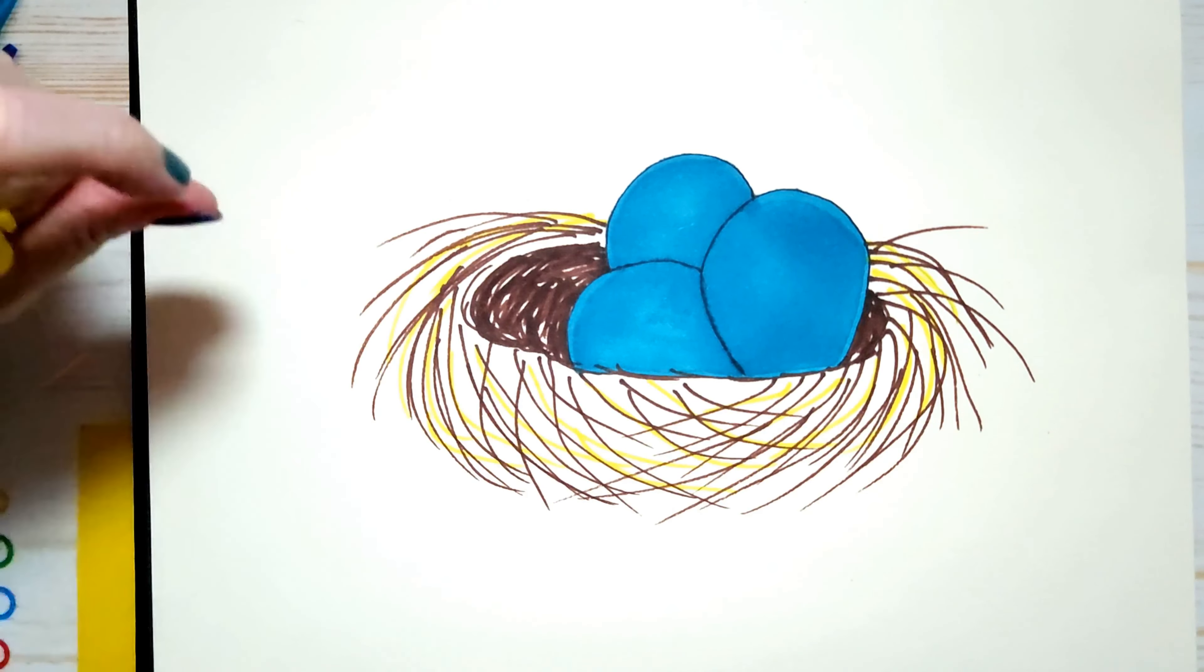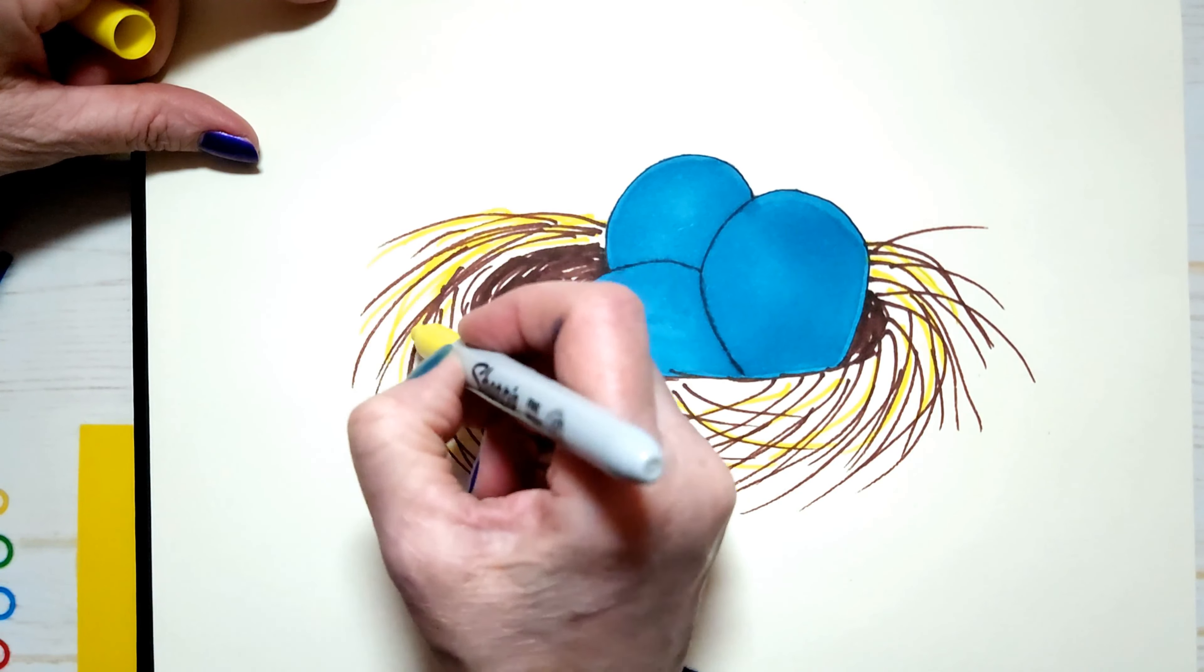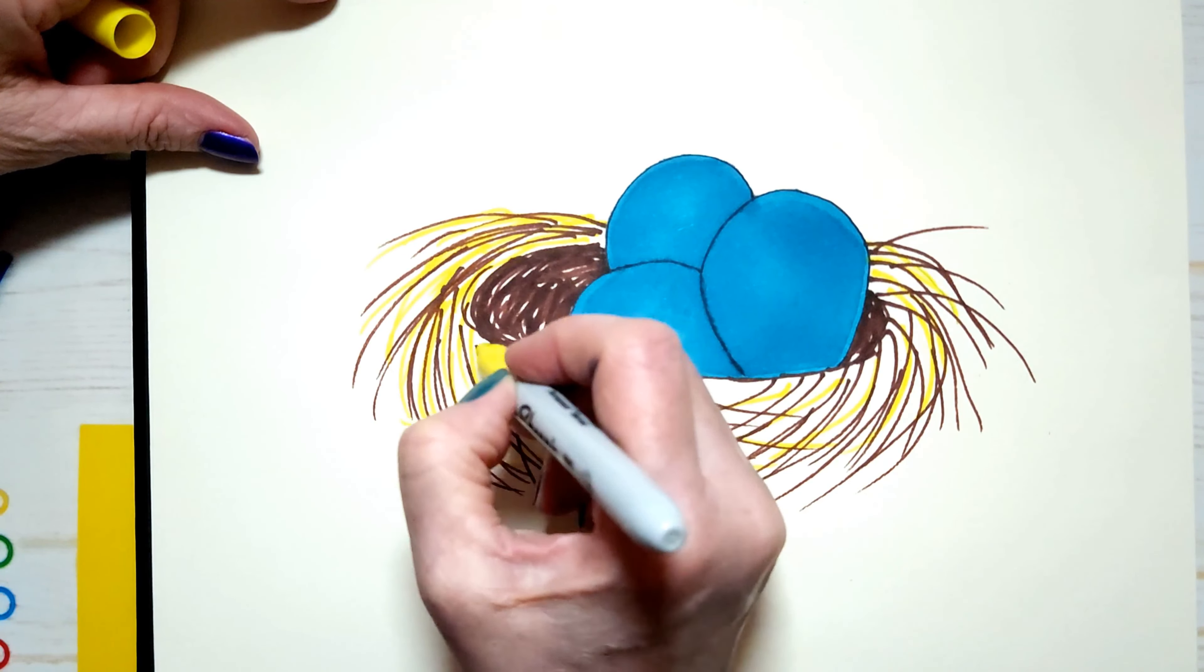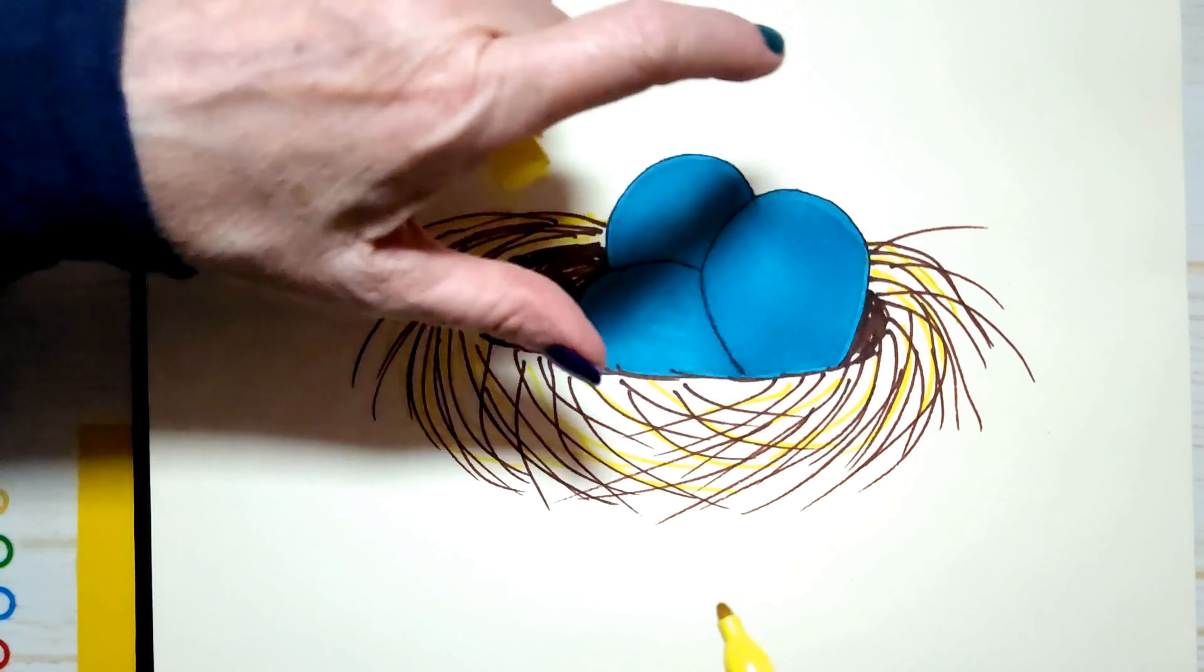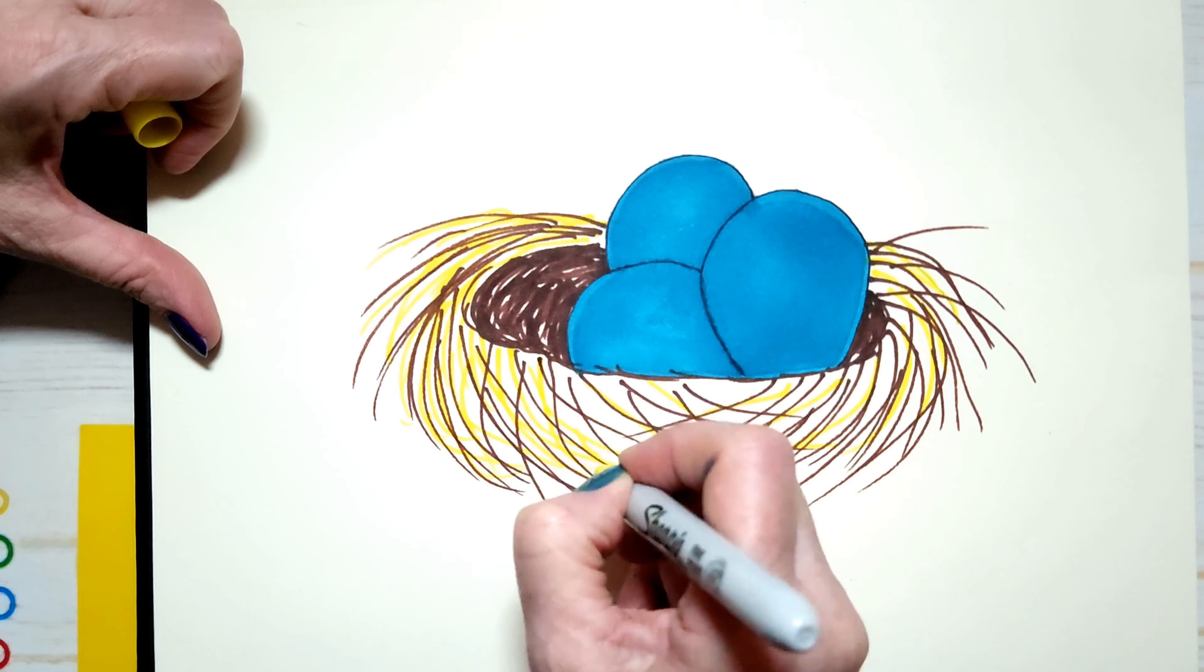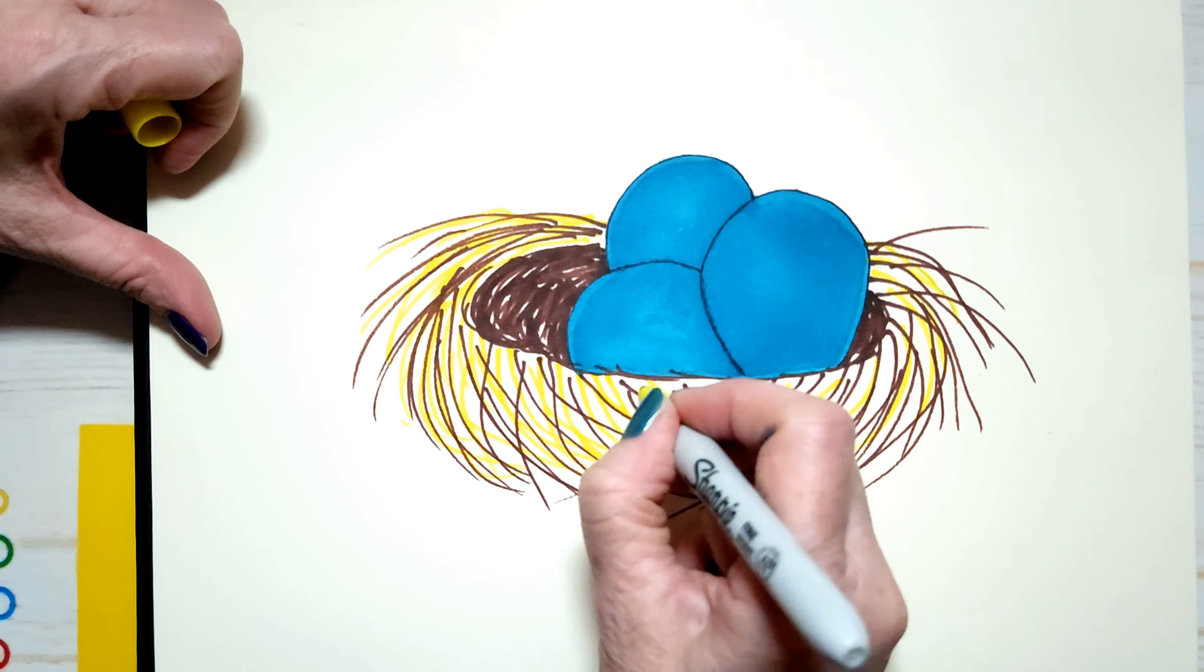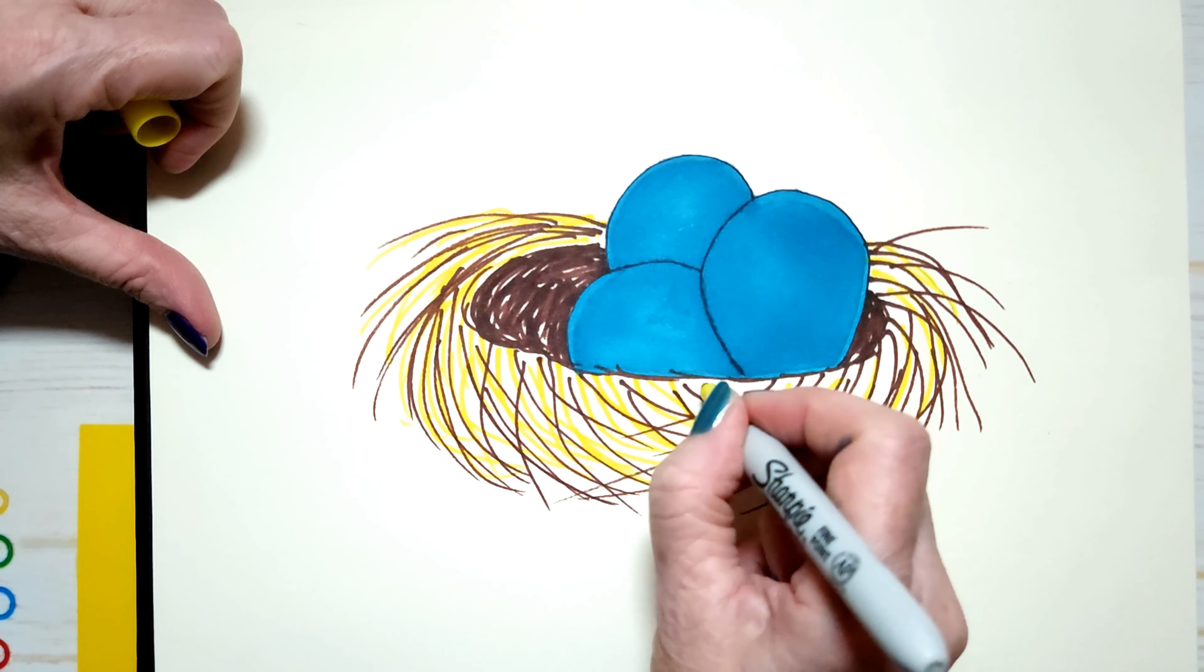Just putting in twigs, but not here or here. And I'm being very careful not to get yellow into the eggs. Because when you mix yellow and blue, do you know what color you get?